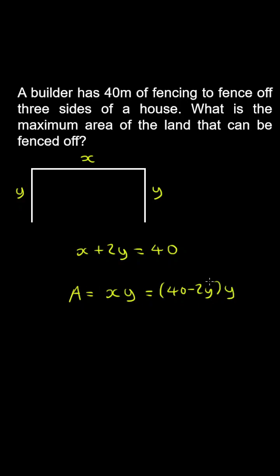So we can have the area as a function of one variable, and then we can differentiate the area with respect to y, so that's equal to 40 minus 4y.